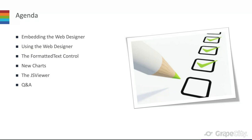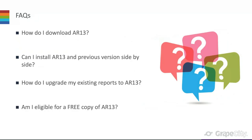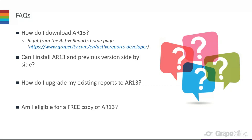Before we get started, let's address a few questions we always get asked. First: how do I download Active Reports 13? You can download it by going straight to the Active Reports website — there's a big button that says Download, click that, and it'll take you to the download page.